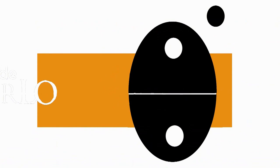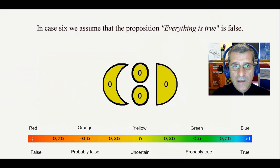In case 6, we assume that the proposition everything is true is false. At that time, we only know that both twins are not at home.